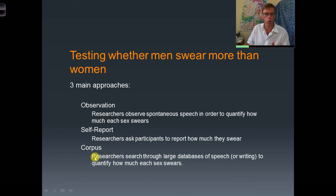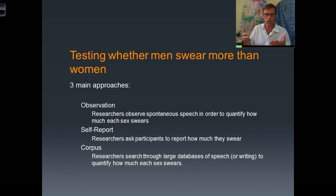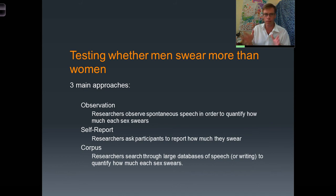These internal review boards were established around the 1970s to ensure human subject research was done ethically, because there had been some really unethical studies historically. Then there's a corpus-based approach, where we research through a large database of speech — typically written corpora, which have to be large. It's easier to collect written documents; for example, you could collect 20 years of the New York Times, which is digitalized and could serve as a corpus, with items tagged with biographical information about who wrote them.